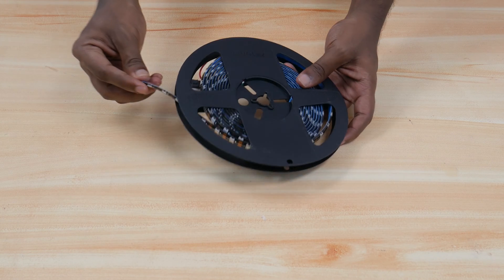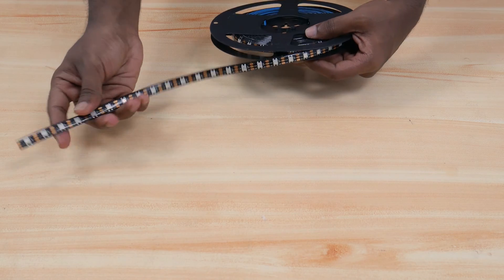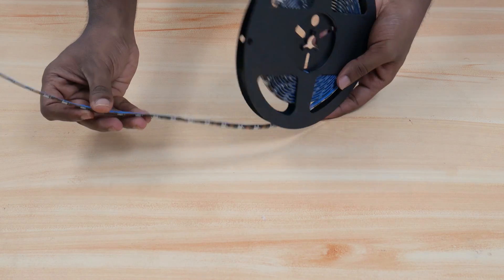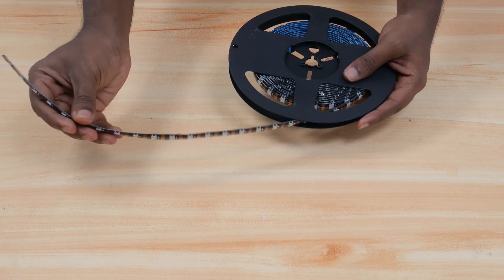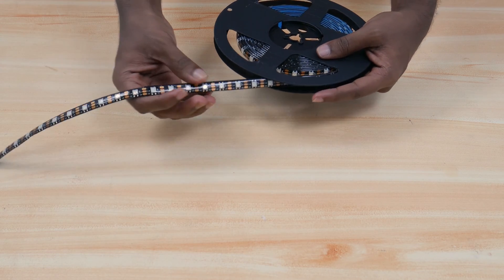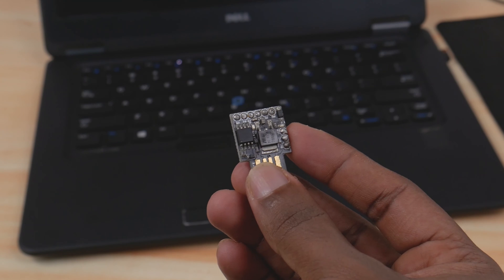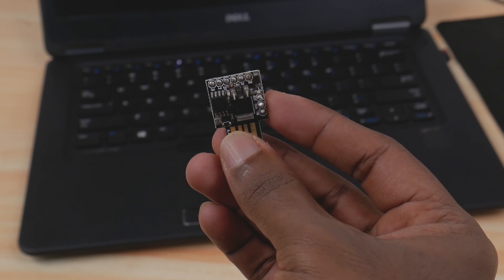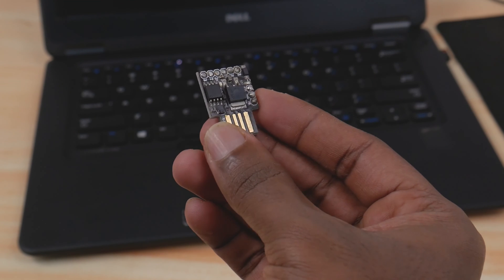Before getting into the woodworking part, let's set up the electronics required for the project. WS2812B is the LED strip we're using to build this project. For our purpose, we need around 26 LEDs from the strip. To control the LEDs, we're using the Digispark ATtiny85 microcontroller, which can be directly plugged into the USB port of the computer and is directly programmable using Arduino IDE.